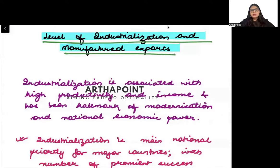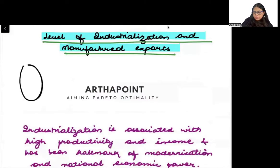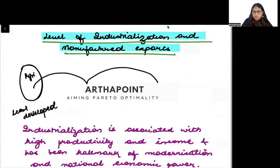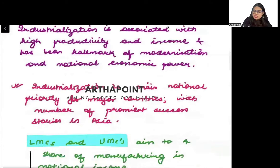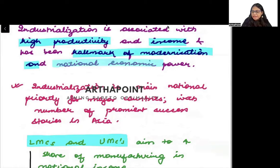Industrialization and manufactured exports. It is assumed that a least developed country will be an agricultural country, and as a country moves towards development it will increase its manufacturing sector and then its service sector. So whenever industrialization takes place, it means that the country is on the path of development.